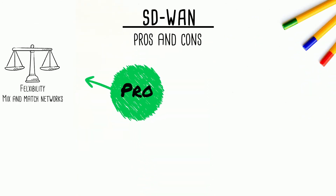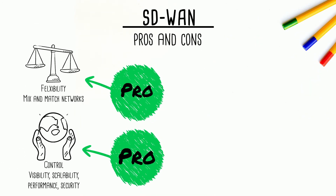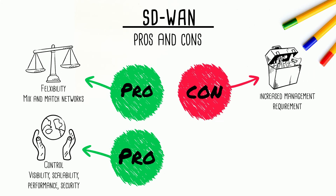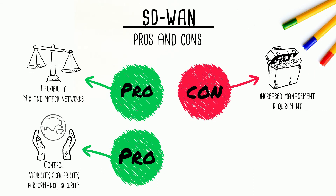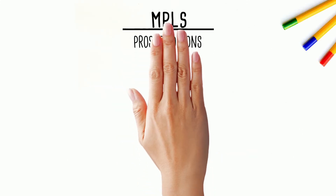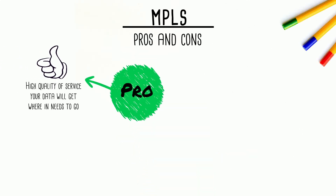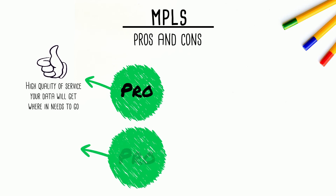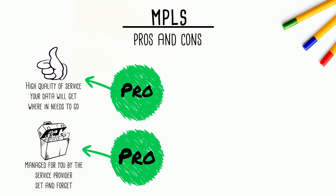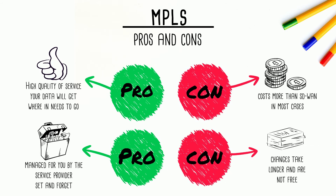SD-WAN is both flexible and allows a high level of control, but requires increased resources to manage and plan the environment. MPLS requires a high quality of service and is managed by your service provider, but generally costs more and changes are not instantaneous.